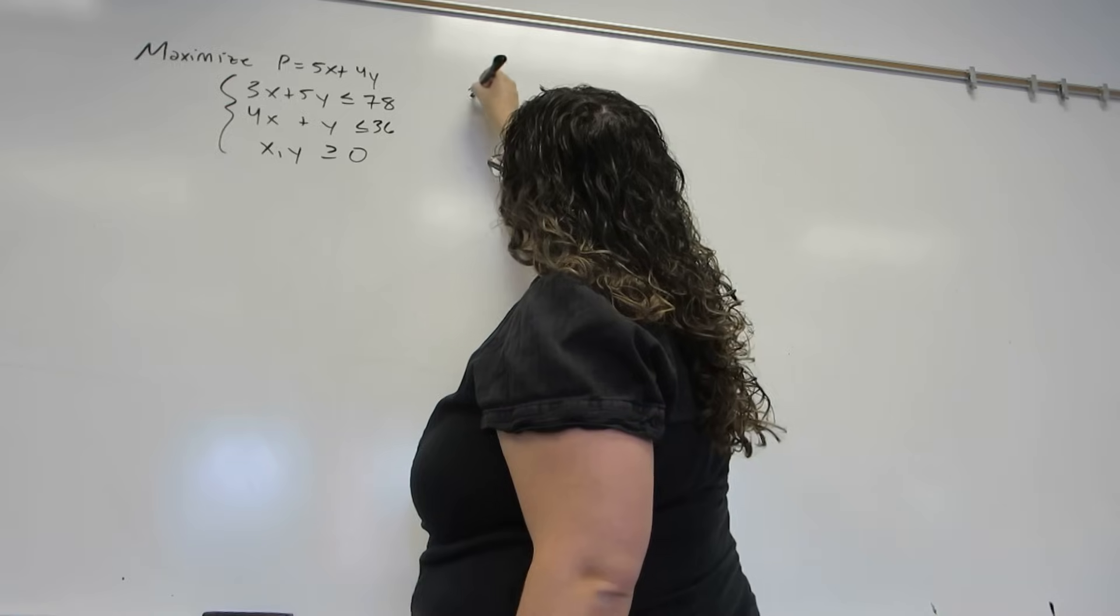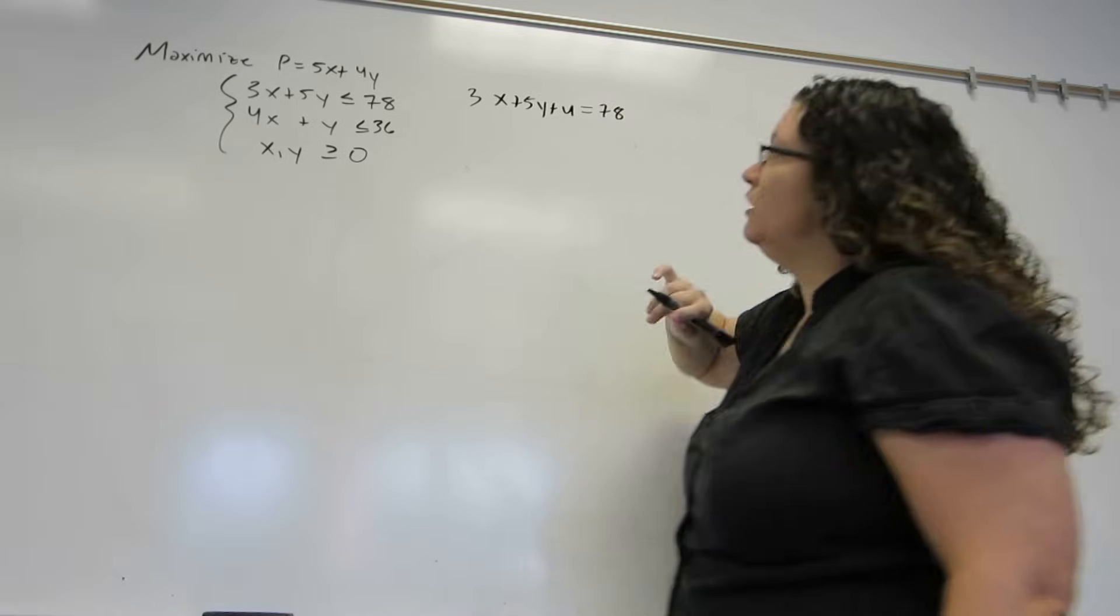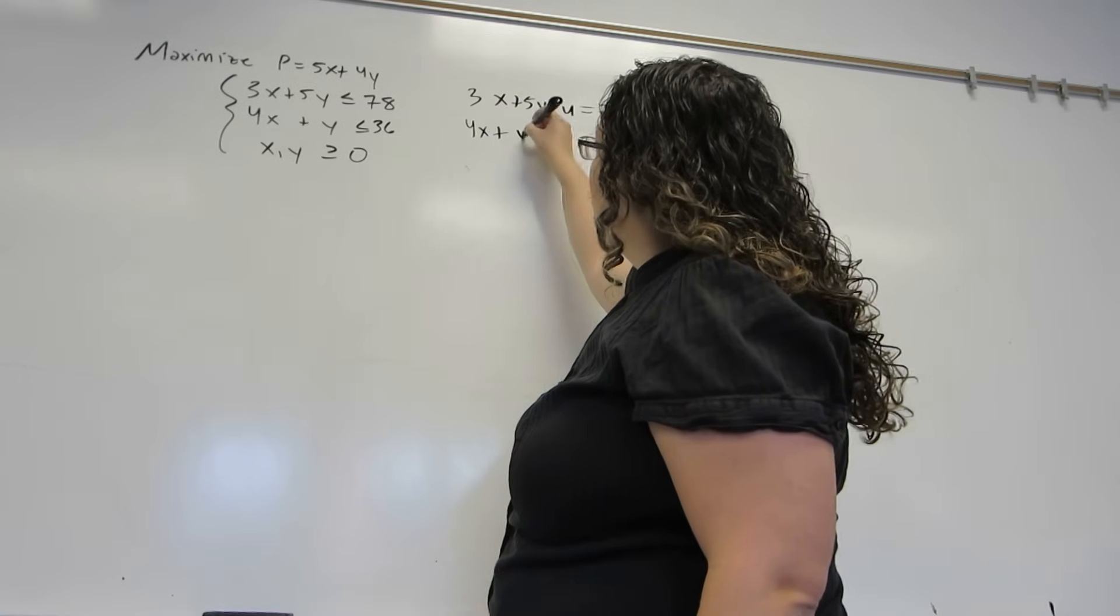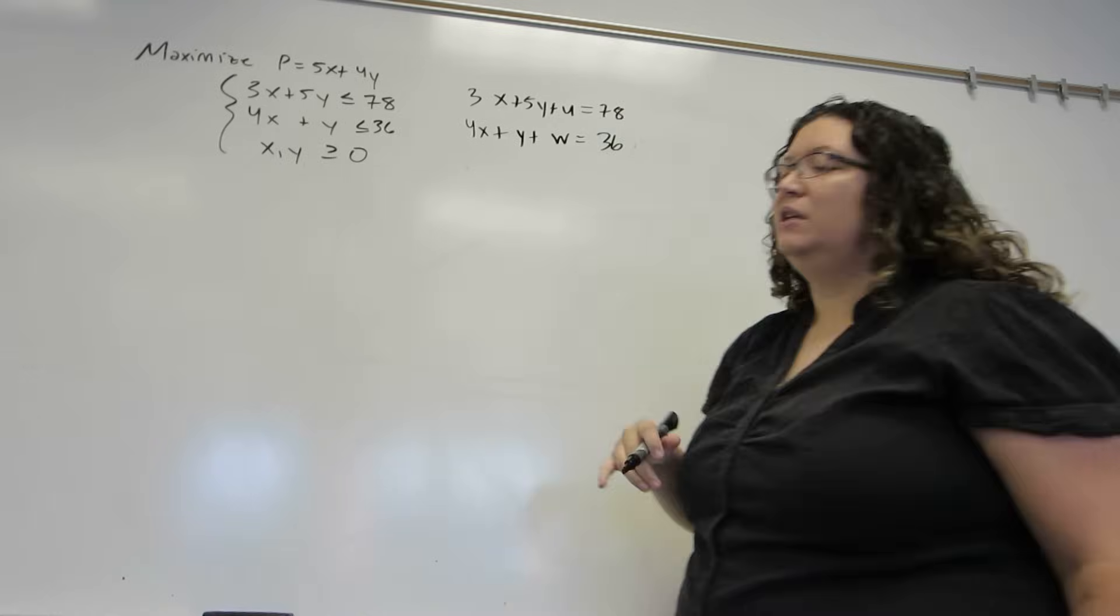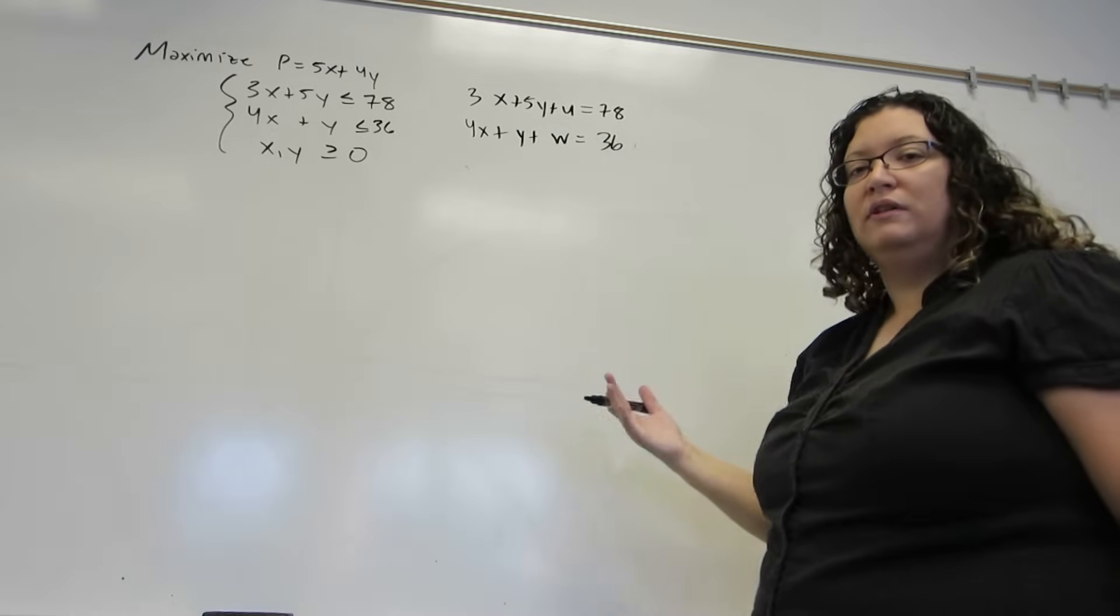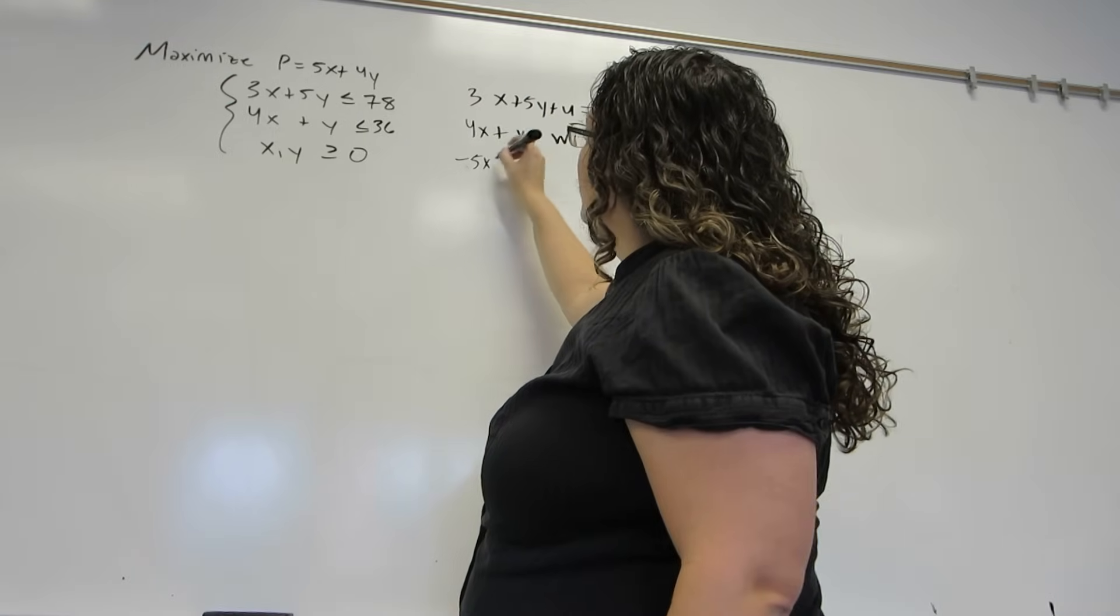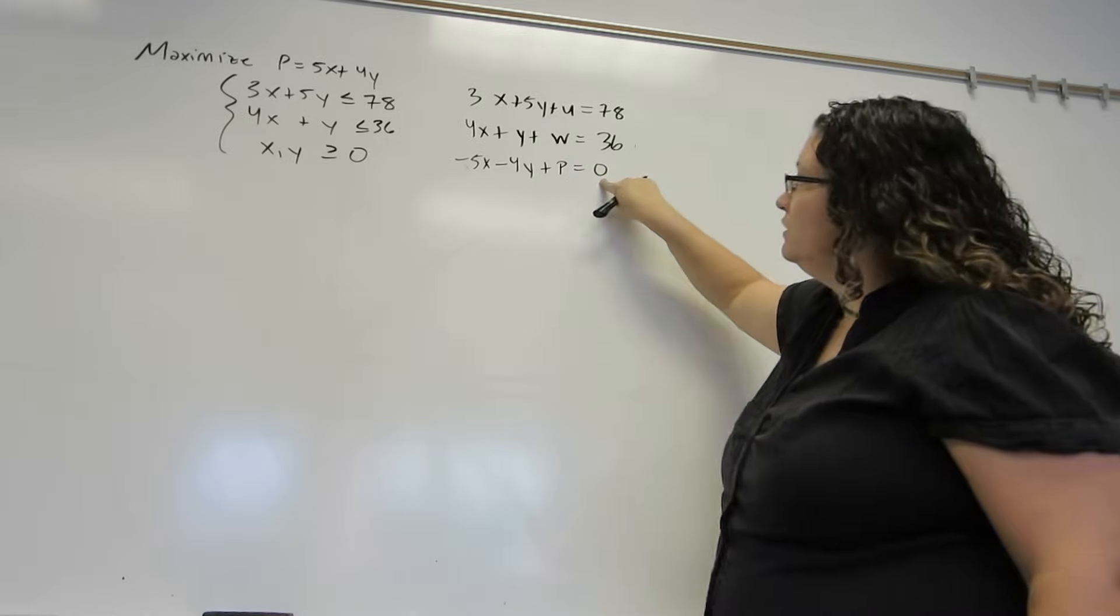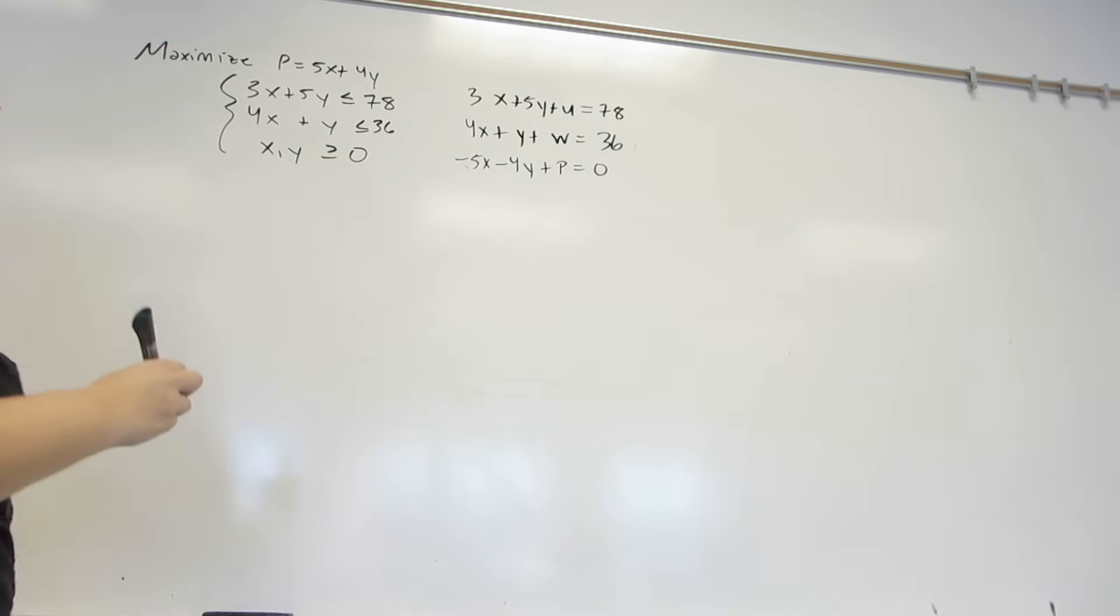So for our first constraint, we're going to insert the slack variable u to turn it into an equation instead of an inequality. For our second, we'll insert the slack variable w to turn it into an equation instead of an inequality. We don't need to worry about these ones because they're included in the simplex method. But we do need to rewrite this. And we want to move everything over to the left hand side because we want a zero on one side and we want the p to be positive. So now we have our initial tableau.